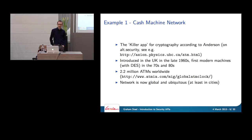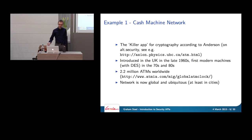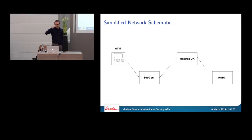Let's look at the cash machine network — the 'fruit fly' example for security APIs, the most well-studied area. According to various sources, ATMs were the killer app for cryptography, introduced in the UK in the late 1960s, with modern DES encryption appearing in the 70s and 80s. There are approximately 2.2 million ATMs activated worldwide — you can find one in pretty much any major city.